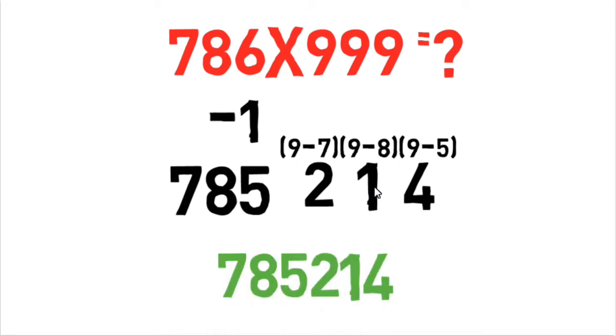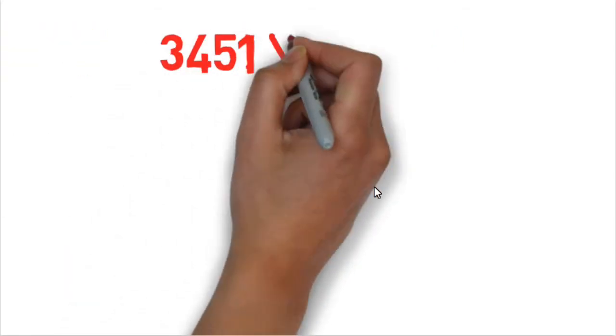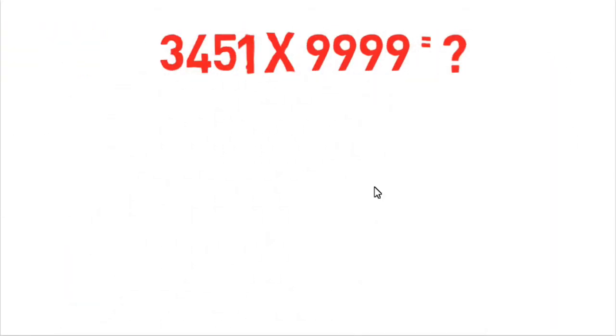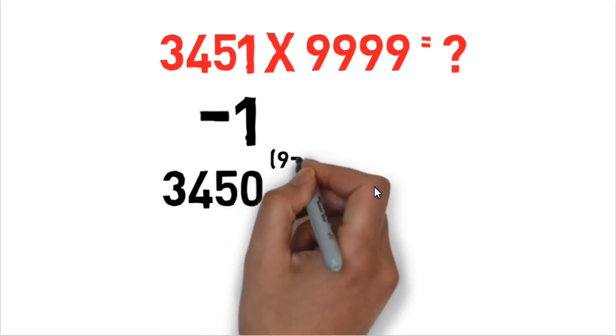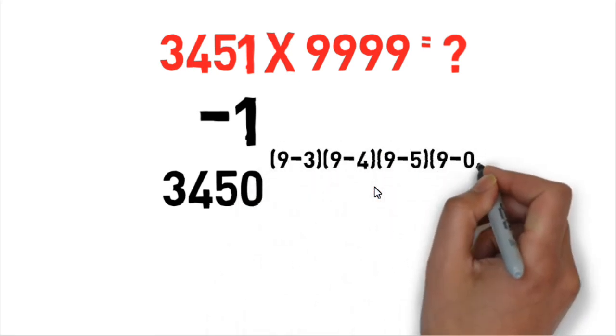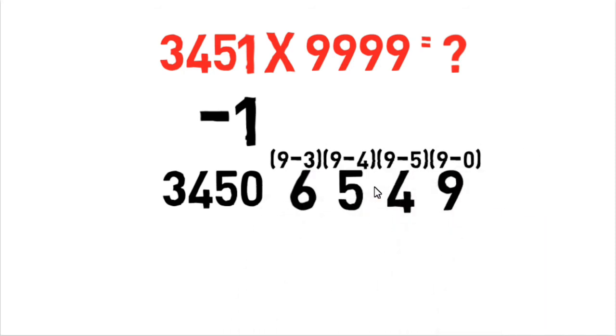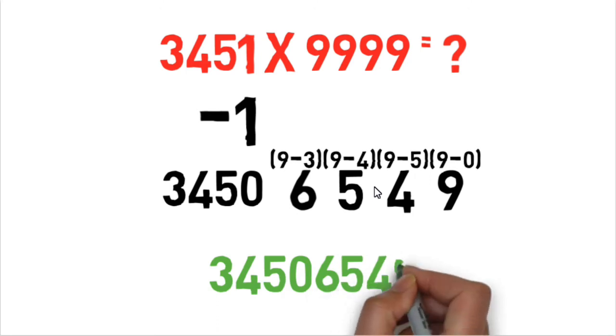So another example says 3451 multiplied by 9999. 3451 minus 1 equals 3450, and now the rest four digits we'll write in this way, so the rest four digits will be 6549. So the answer will be 3450,6549. Simple friends.